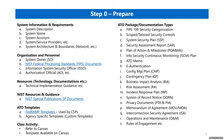The person or body that grants the ATO is called the Authorizing Official, or AO. A student notes that the AO is usually the person who signs the letter allowing the system owner to use the system, and that the AO supports the CISO in the authorization process.